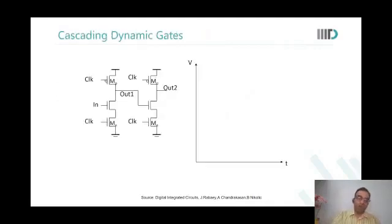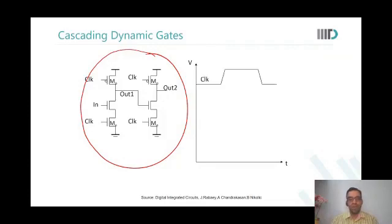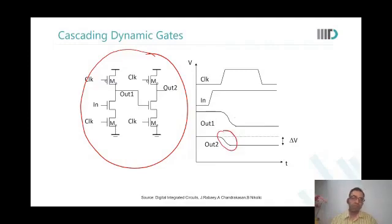We formally come to the topic of cascading dynamic gates. This is not the right way to cascade them. If the output transition is from one to zero, there will be some discharge that will not be refreshed. Out one goes to zero after clock comes, but even before that, out two has already discharged. So you cannot really cascade dynamic gates just like this.